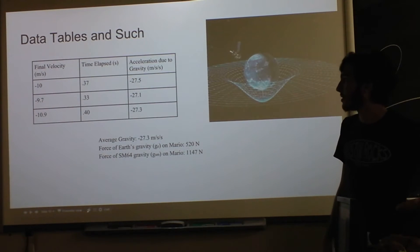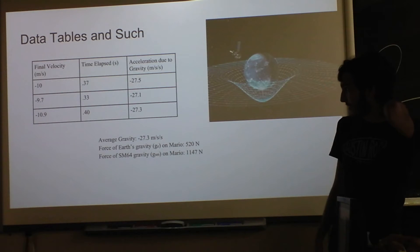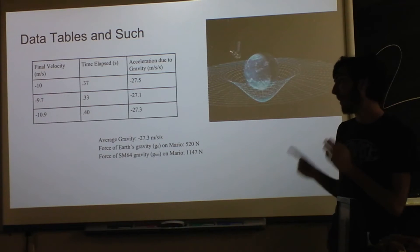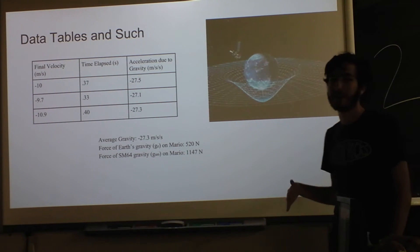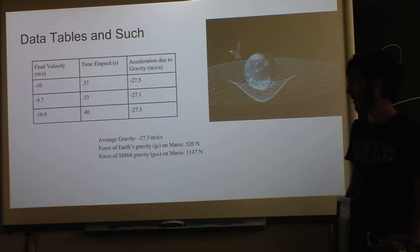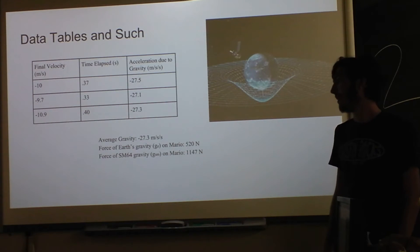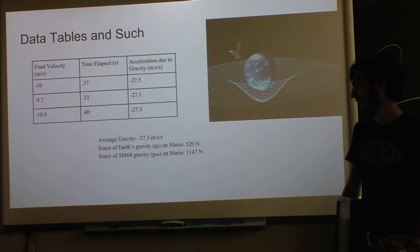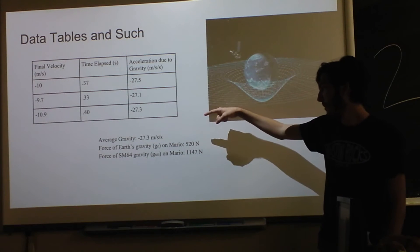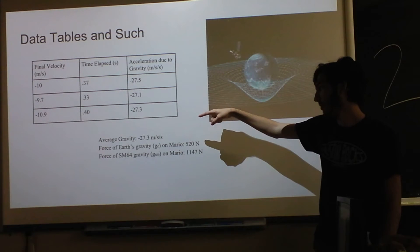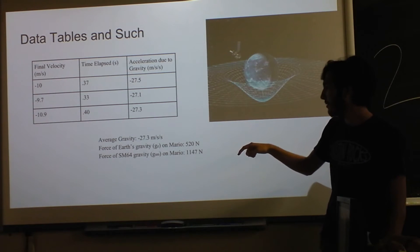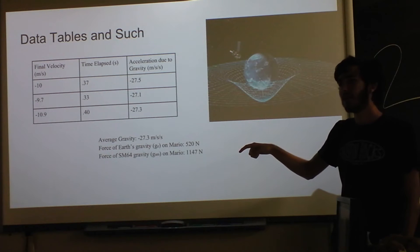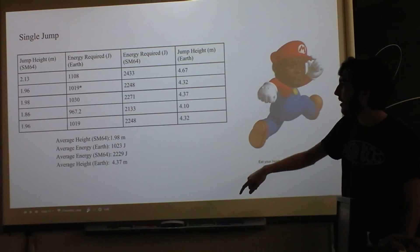Here are the data tables — some of what I did for the falling. This is what I found for his gravity. I found the final velocity first, then figured out how much distance he covered after a set amount of time, and found the acceleration due to gravity — which is actually really a lot more than on Earth. Then I found how much force would be put on Mario from gravity.